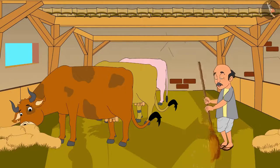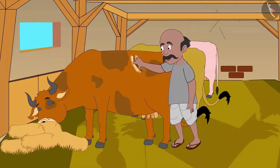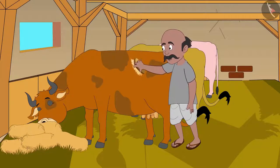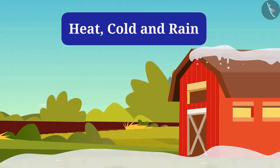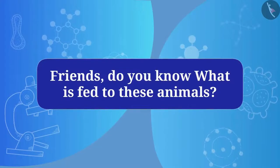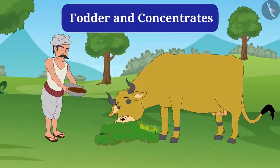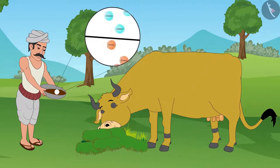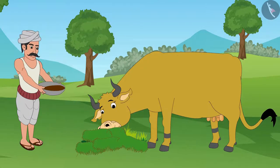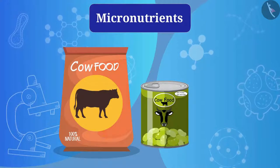In cattle farming, cleanliness and catering of animals are also important. The animals are regularly brushed to remove dirt and loose hair, and they are provided with ventilated roofing which protects them from heat, cold, and rain. Animals are fed with fodder and concentrates — coarse feed contains mostly fibers, while concentrates contain high levels of proteins and other nutrients. In addition, micronutrients are given to promote animal health and milk production.